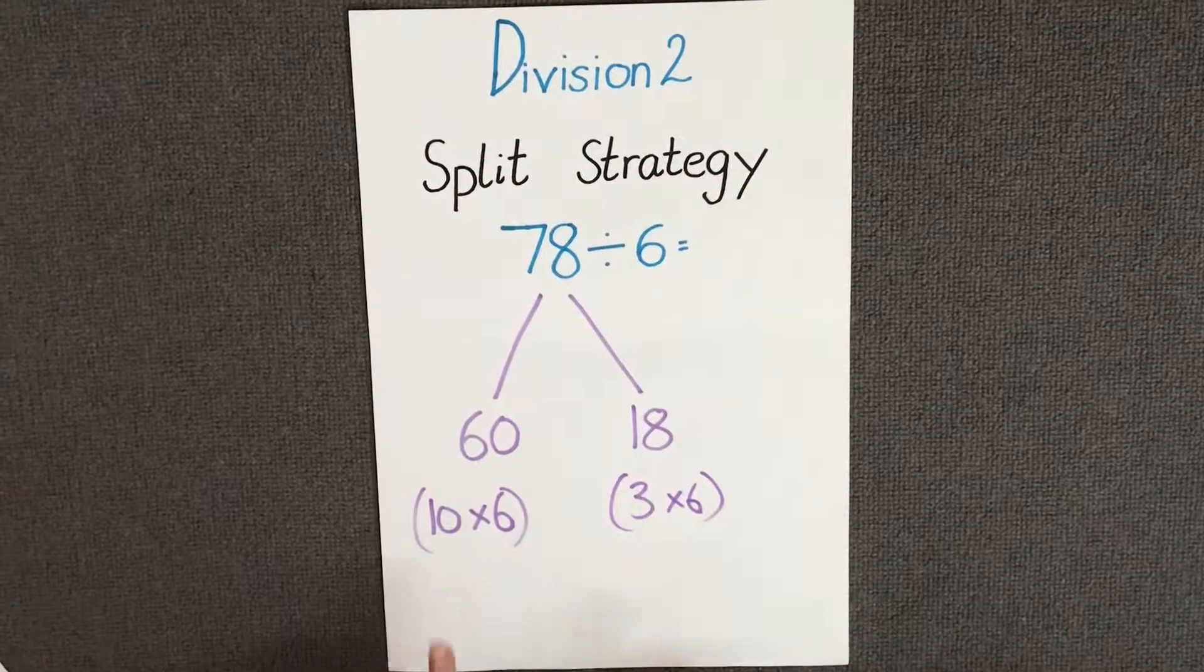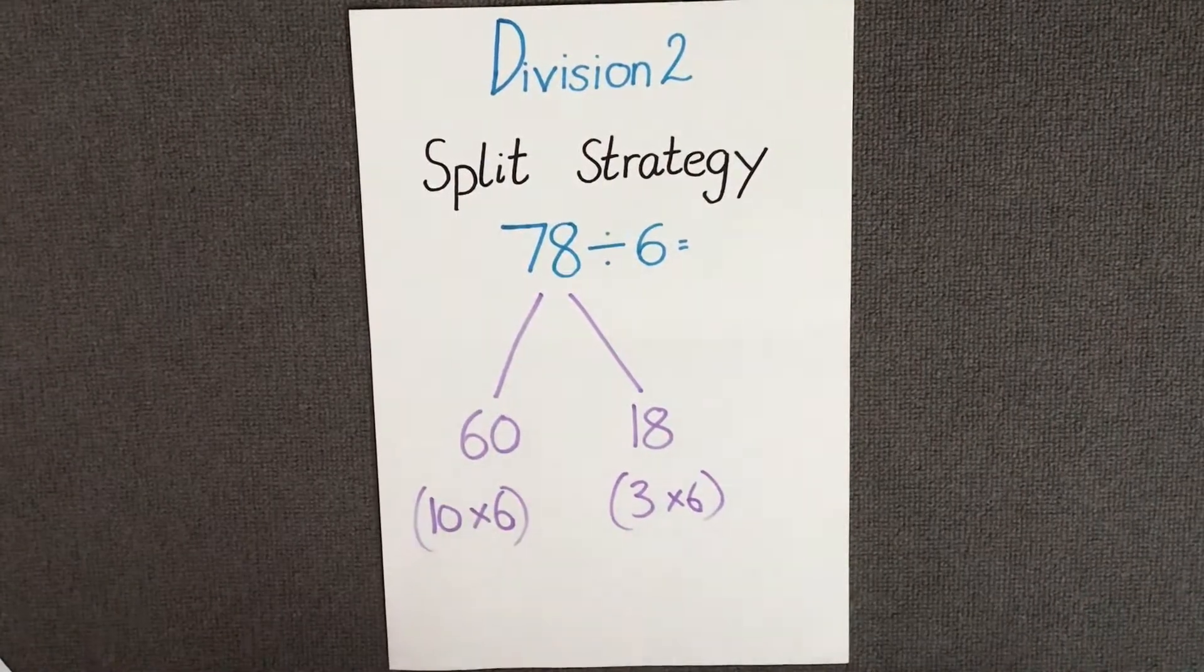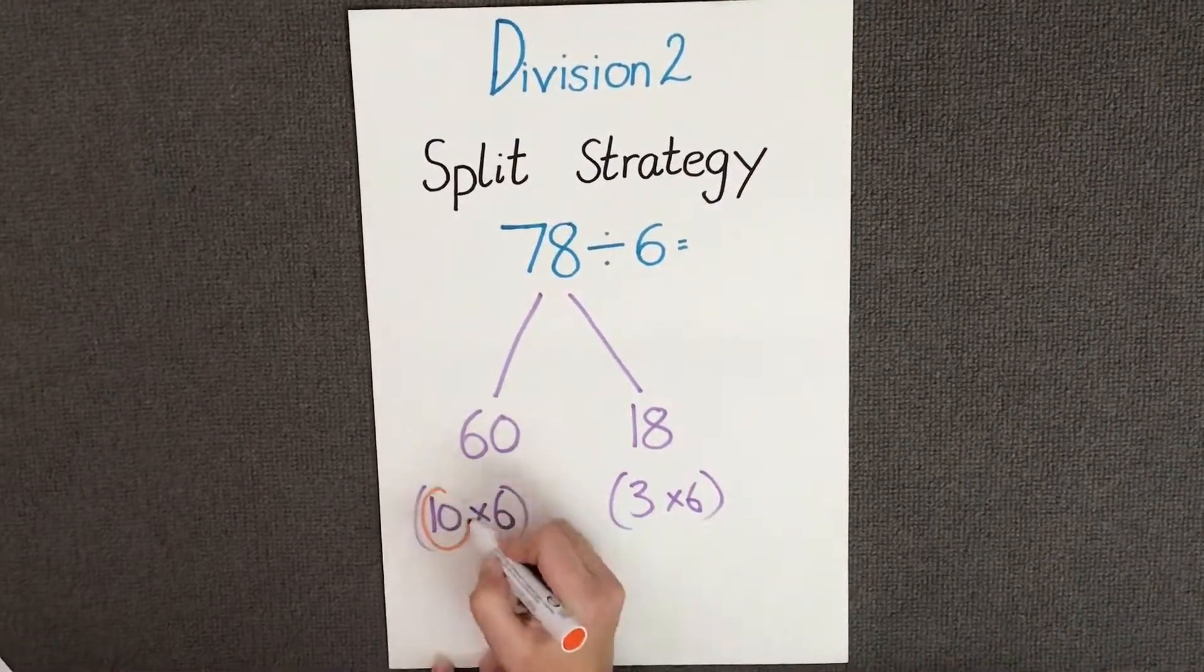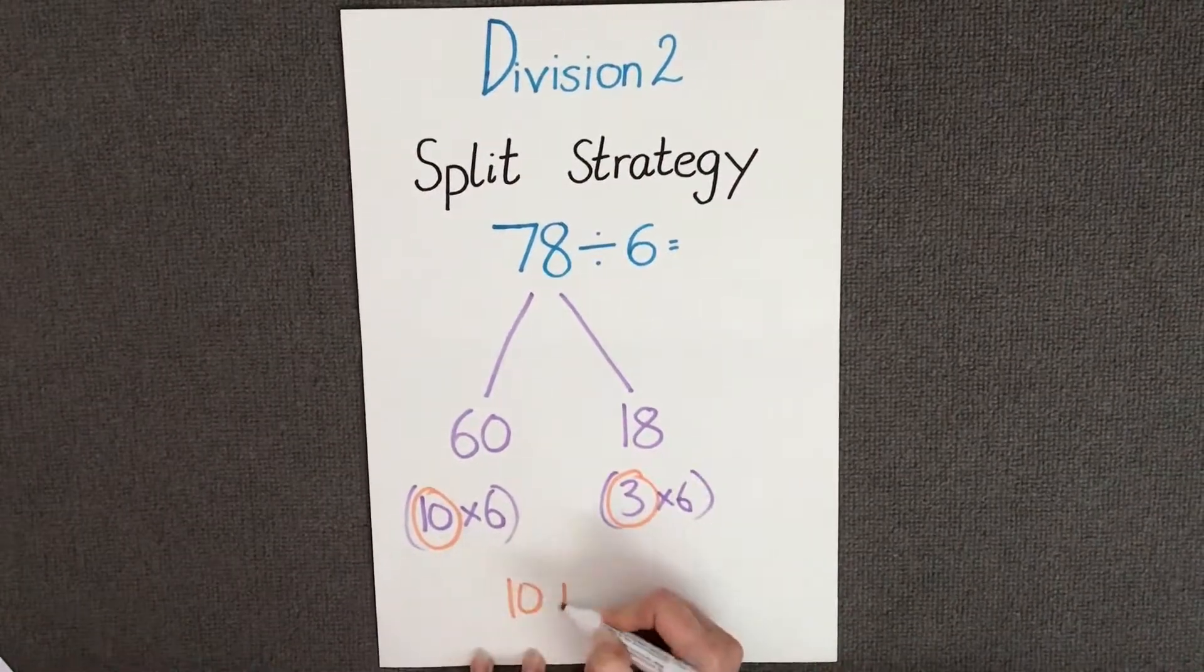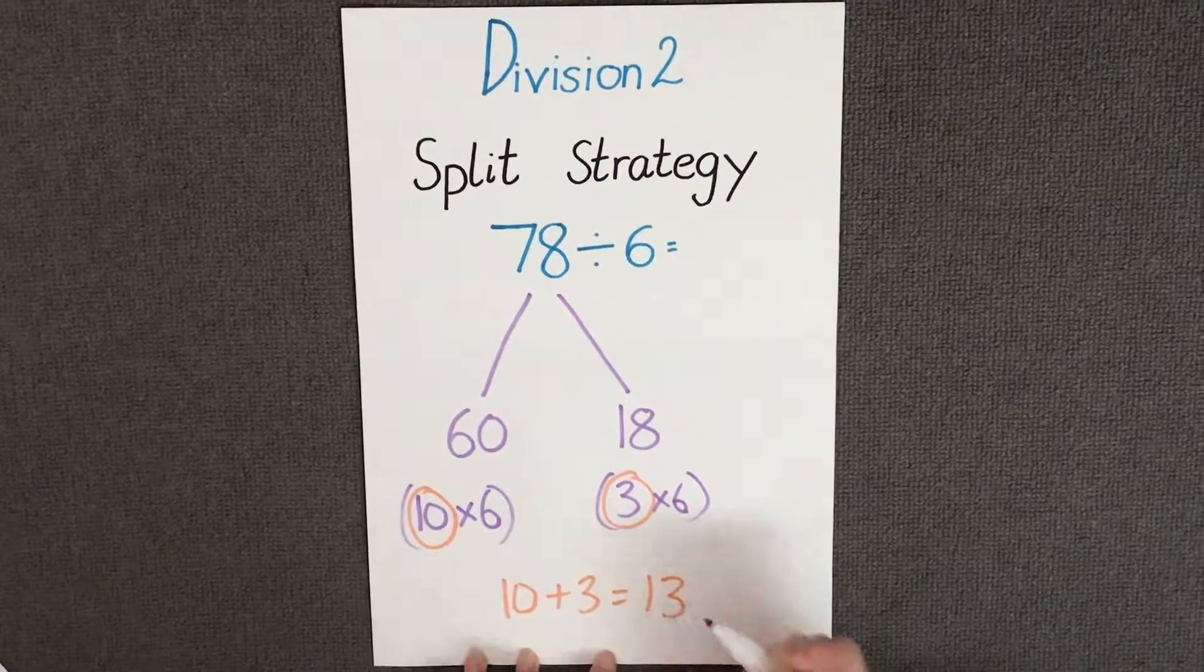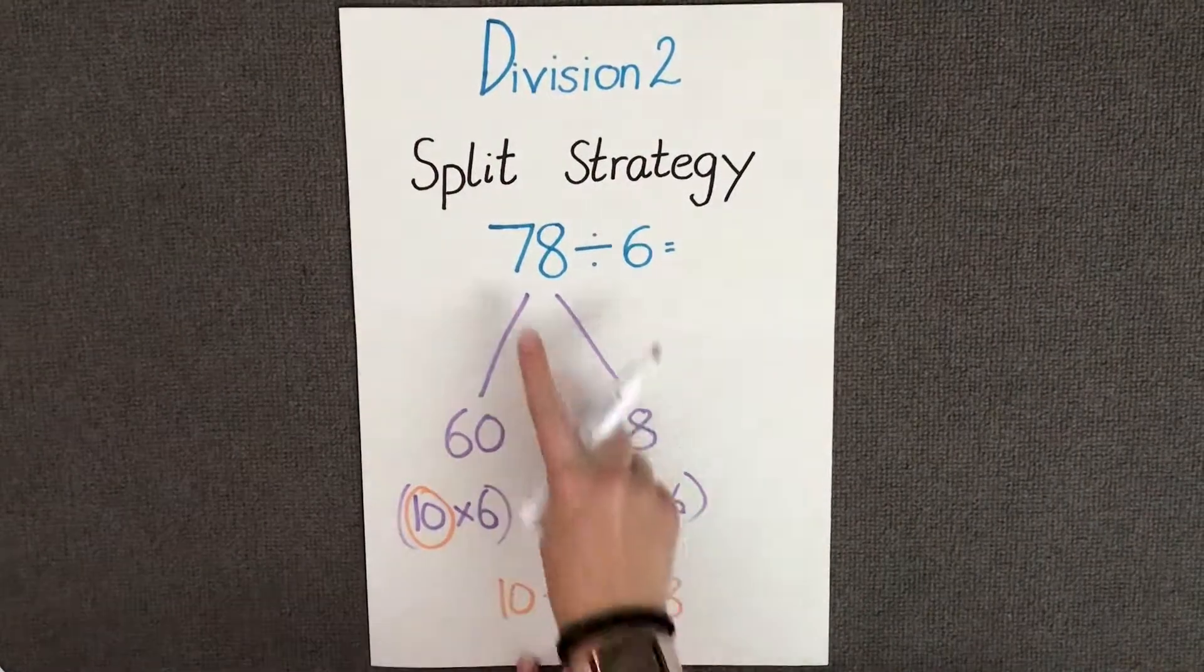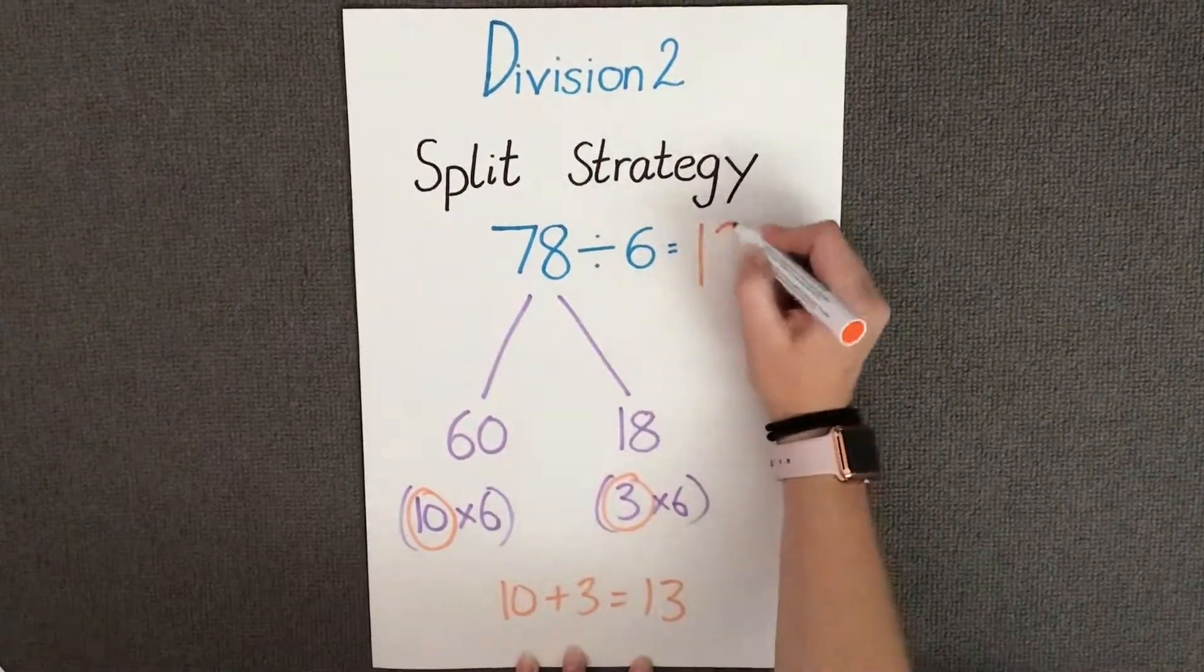Finally let's combine our totals to find our answer. So we have 10 and 3, and 10 plus 3 equals 13. Therefore your answer to 78 divided by 6 equals 13.